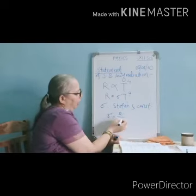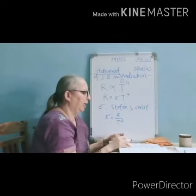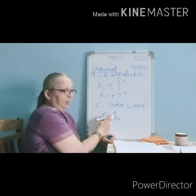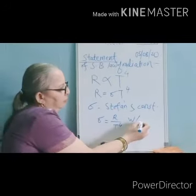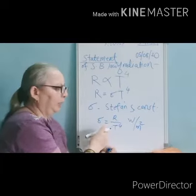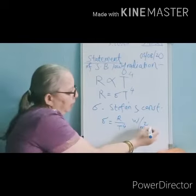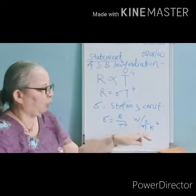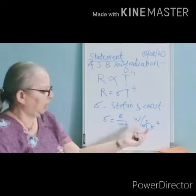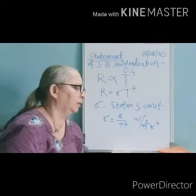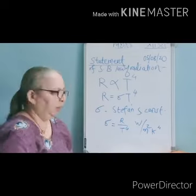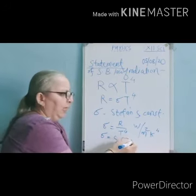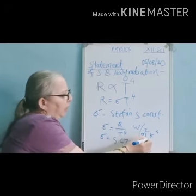Stefan's constant carries SI units. To find the SI unit of σ: σ = R / T⁴. Therefore, in SI system, σ has units of watts per square meter per K⁴. Its numerical value is 5.67 × 10⁻⁸ in SI units.